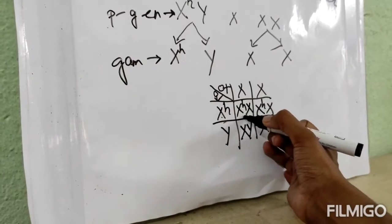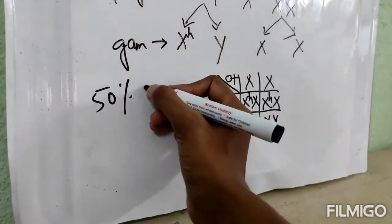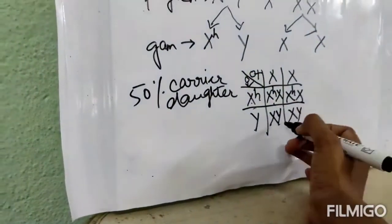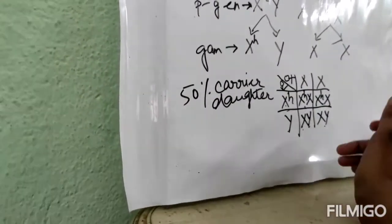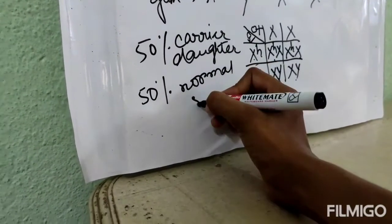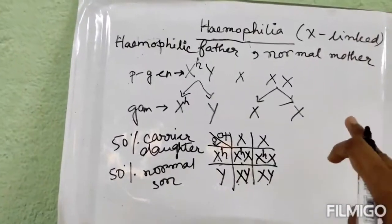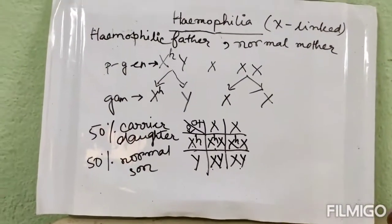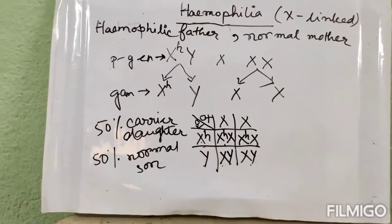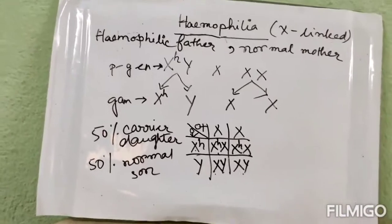X^H-X means carrier daughter, and again X^H-X also means carrier daughter, so there is a 50% chance of having a carrier daughter. X-Y and X-Y means the sons are not affected, so there is a 50% chance of getting a normal son. If the hemophilic father marries a normal mother, any daughter will definitely be a carrier, but any son will be totally normal. This completes the total genetic cross of hemophilia.